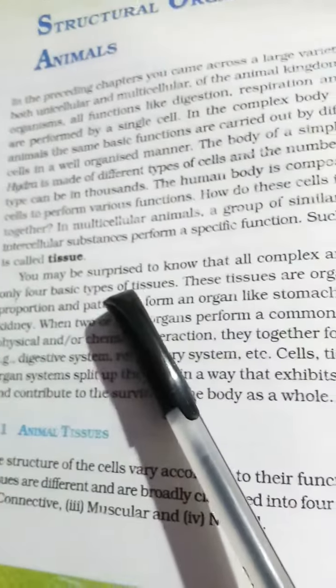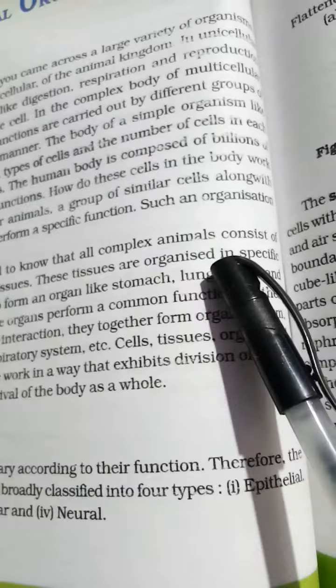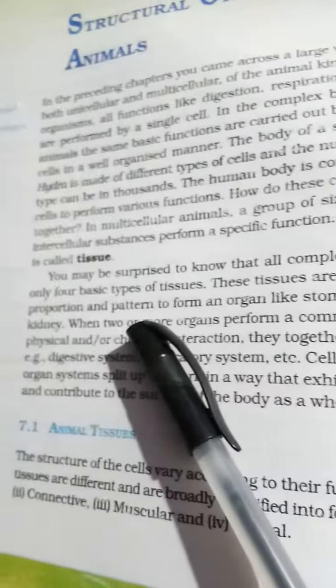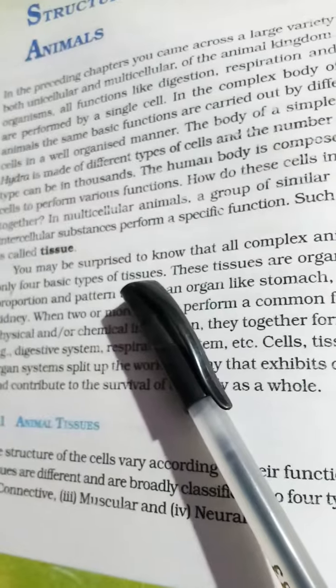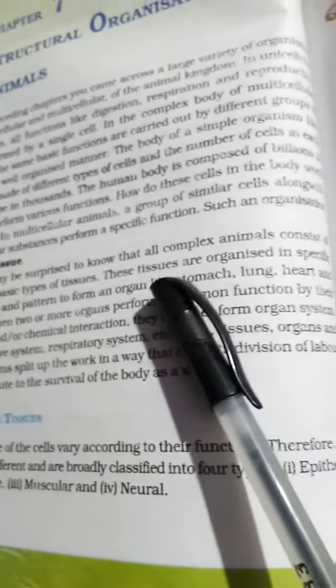You may be surprised to know that all complex animals consist of only four basic types of tissue. So how many types of tissue? Four. These tissues are...